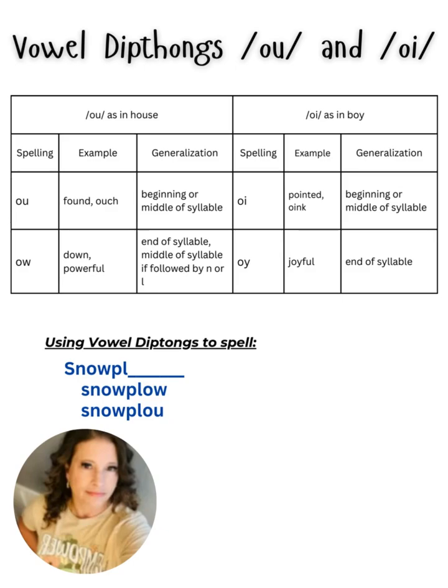Let's try 'avoiding'. I will first break it into syllables: a-void-ing. I hear the OI sound in the second syllable, 'void'. I hear that the OI sound is in the middle of the syllable. So I'm going to go ahead and write down the pieces of the syllable breakings with the middle empty, then use the generalizations to guide me in spelling the OI sound.